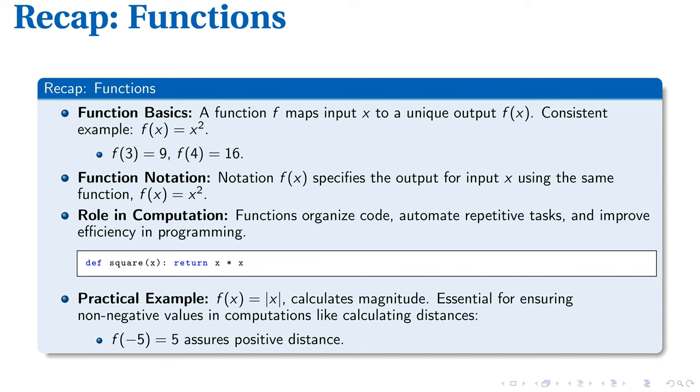Take the Python function square. It's a simple yet powerful tool that returns the square of any input provided. Applying this practically, we find functions like f of x equals the absolute value of x invaluable. This function, which calculates the magnitude of a value,